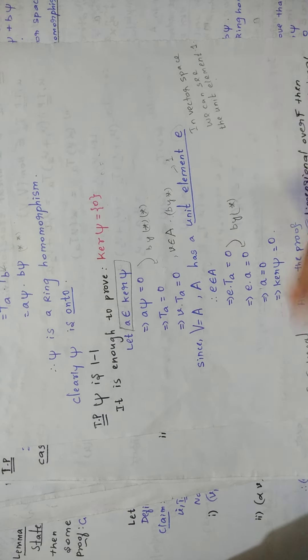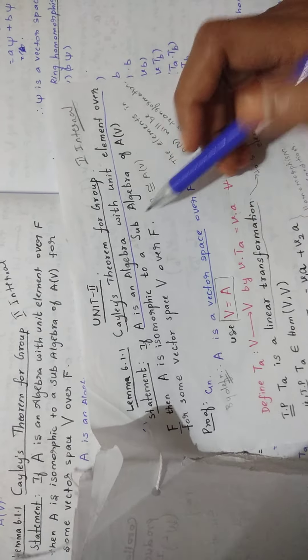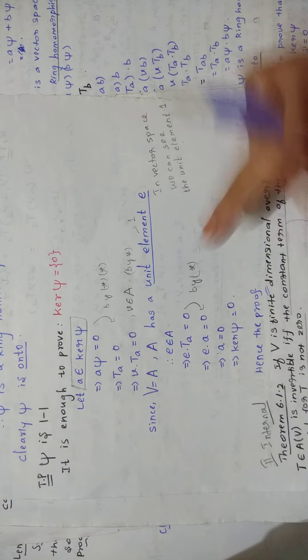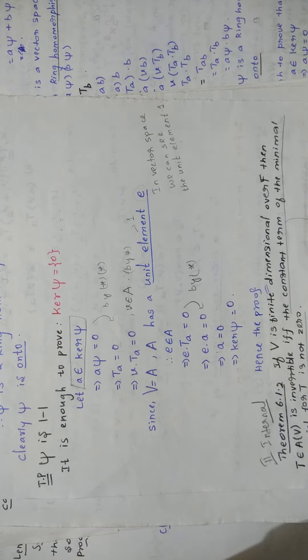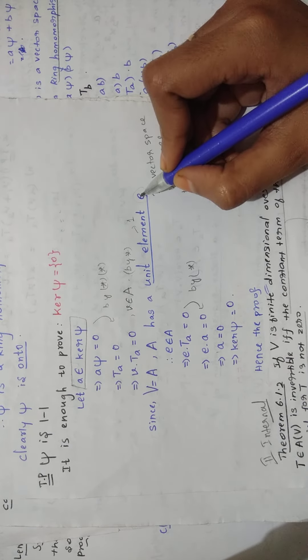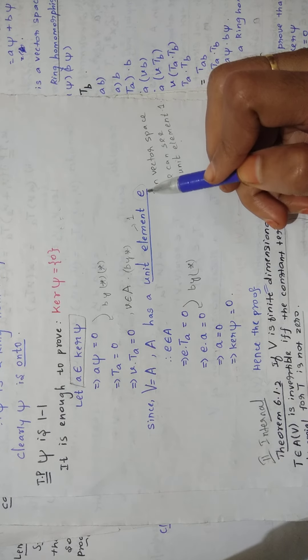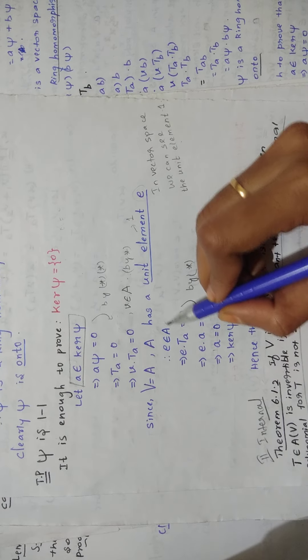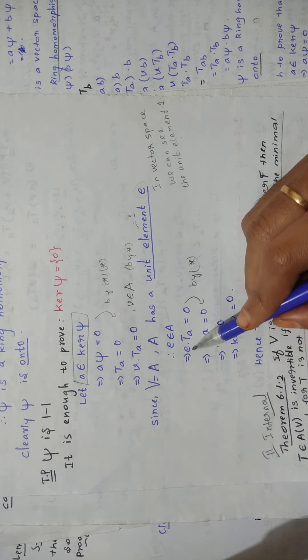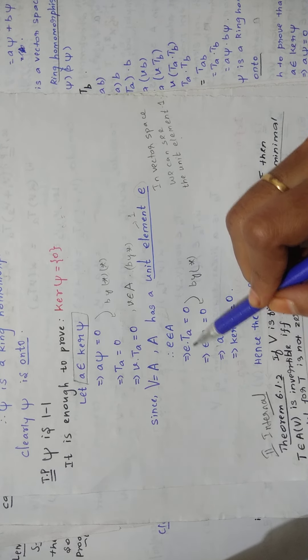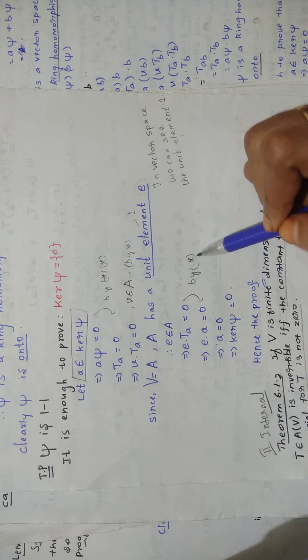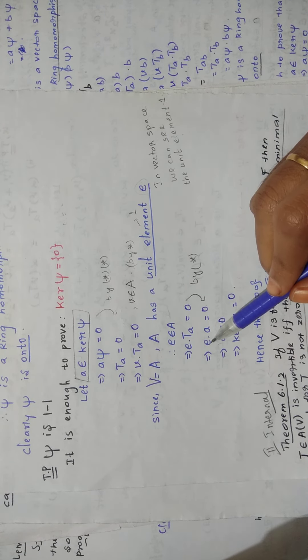A has a unit element. In the statement itself it is given that A is an algebra with a unit element E over the field — the unit element E has value 1. So E belongs to A. Since E belongs to A, we substitute V = E in the equation, giving E · T_A = 0. Now by the star equation, since E is the unit element with value 1, we can simplify this step accordingly.